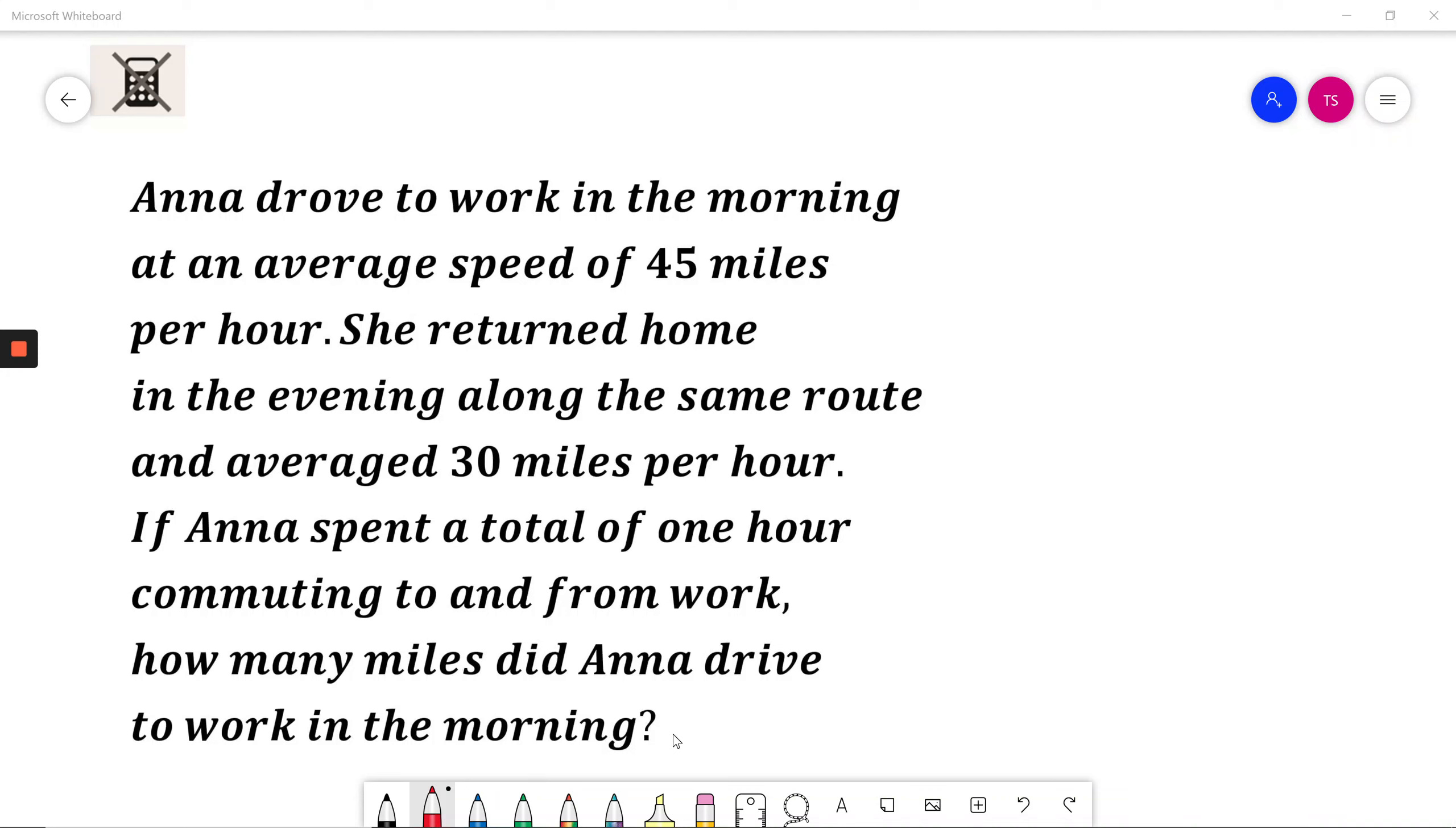Anna drove to work in the morning at an average speed of 45 miles per hour. She returned home in the evening along the same route and averaged 30 miles per hour. If Anna spent a total of one hour commuting to and from work, how many miles did Anna drive to work in the morning? At this moment, I encourage you to pause the video and solve it by yourself.